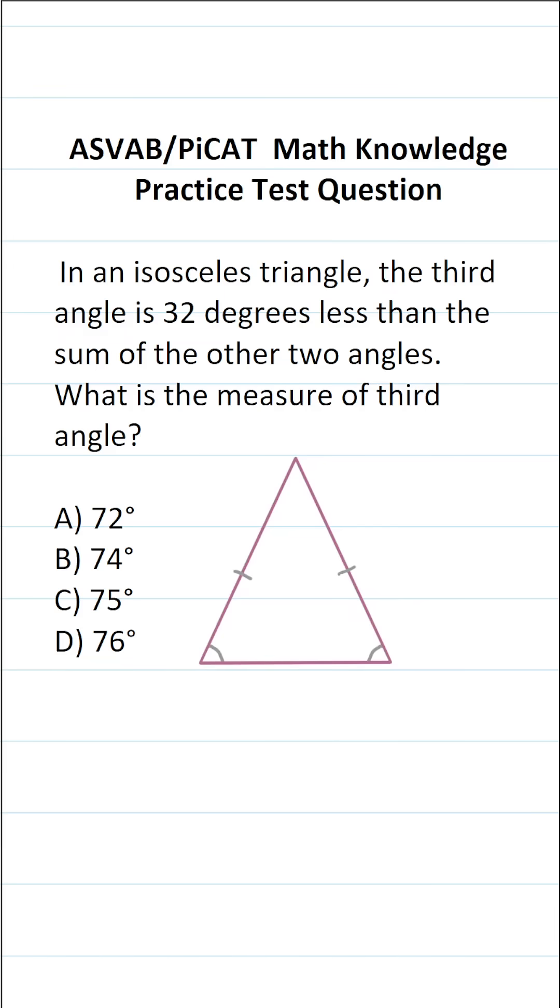This math knowledge practice test question for the ASVAB and PiCAT says, in an isosceles triangle, the third angle is 32 degrees less than the sum of the other two angles. What is the measure of the third angle?